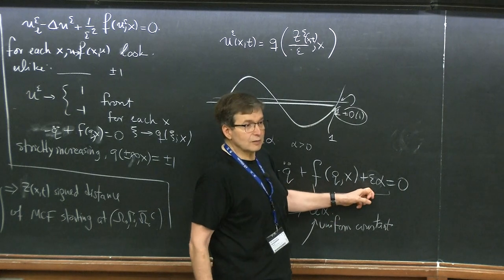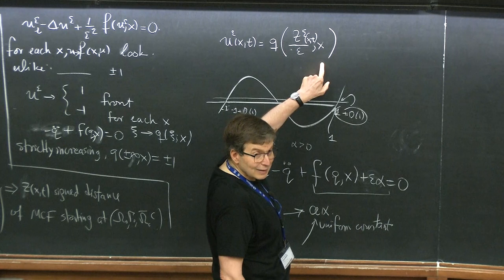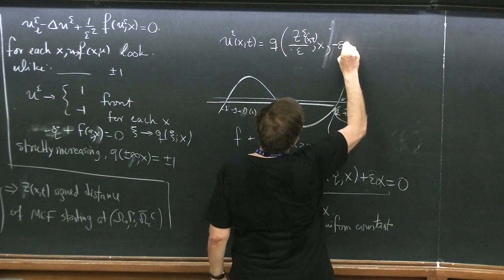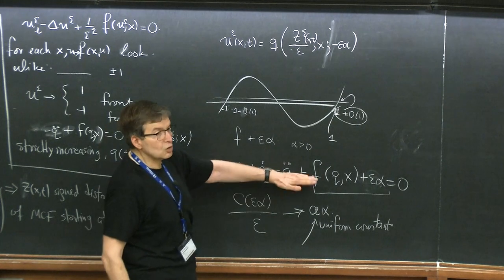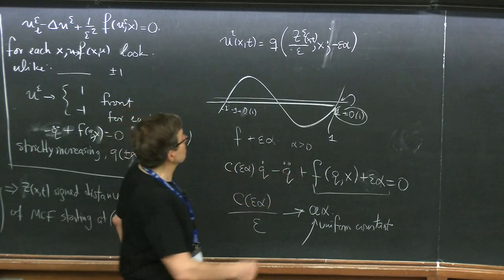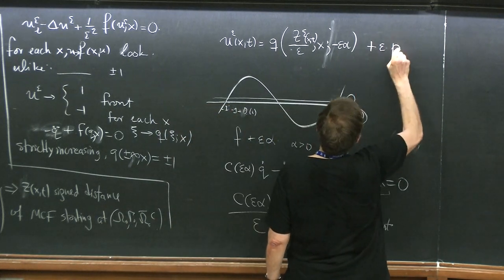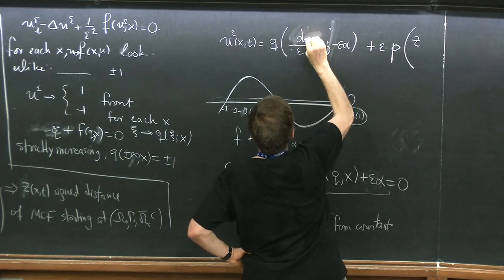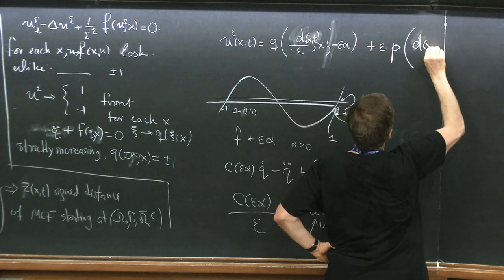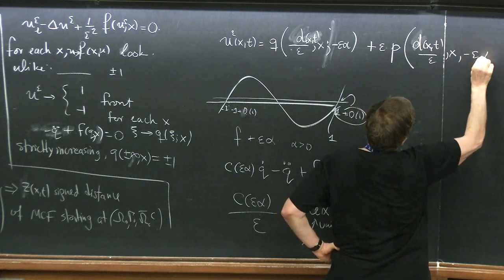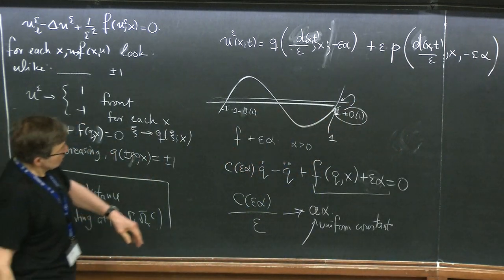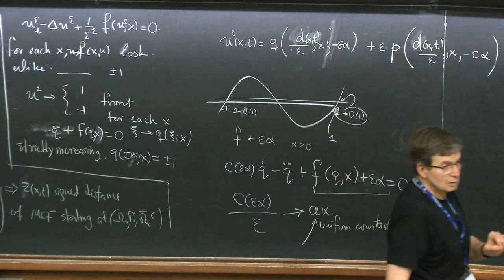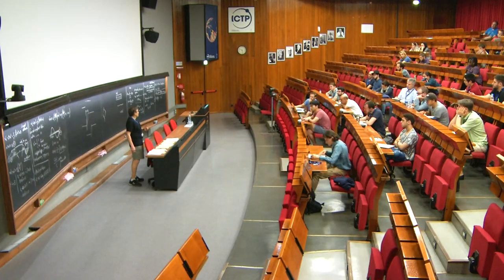There is a theorem going back to Weinberger that says there is a unique C for that problem. It's also easy to prove that C(epsilon alpha)/epsilon converges uniformly to some constant times alpha, where this constant depends on the original F. So these are facts from traveling wave theory. This is the way I'm going to create room: instead of making the expansion with the zero-speed traveling wave, I make an expansion putting here the traveling wave corresponding to this small perturbation.